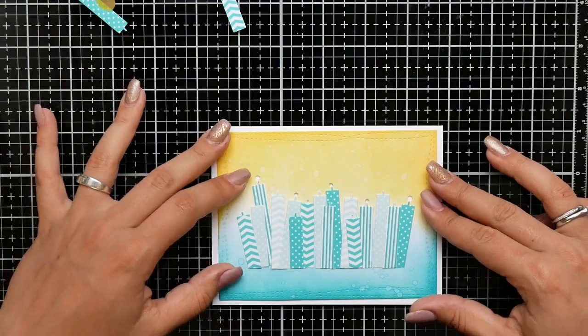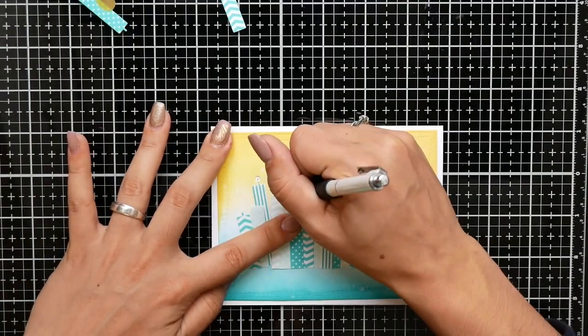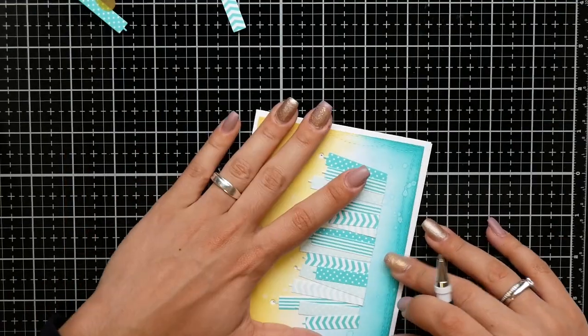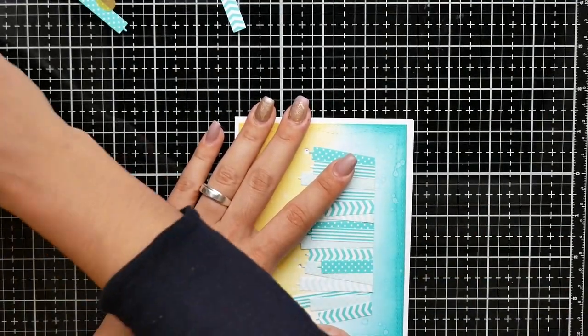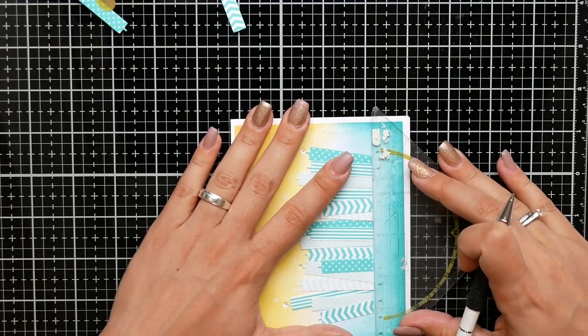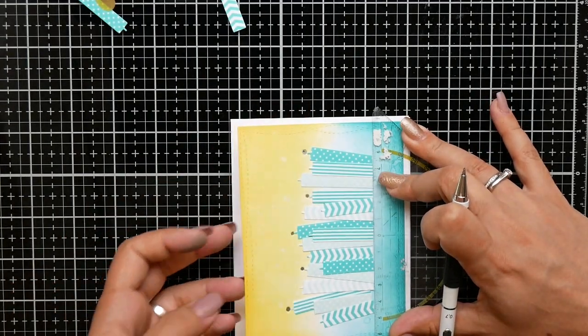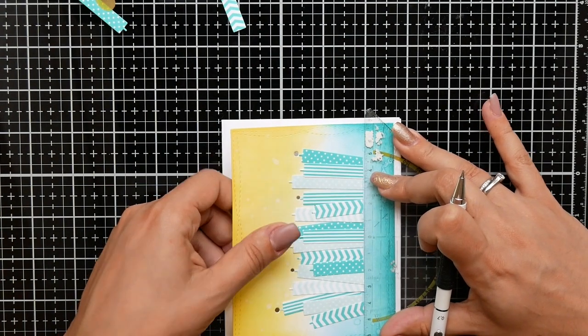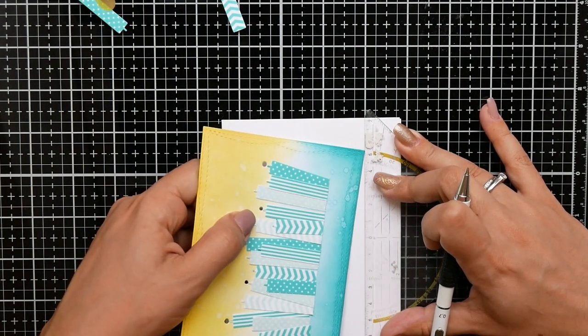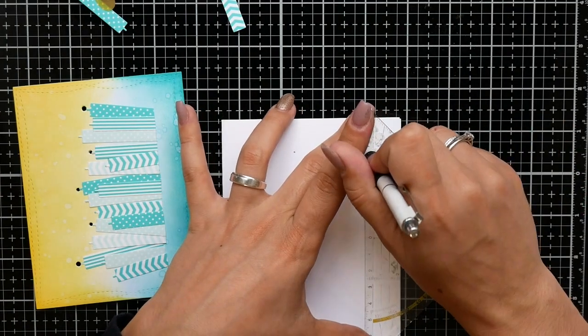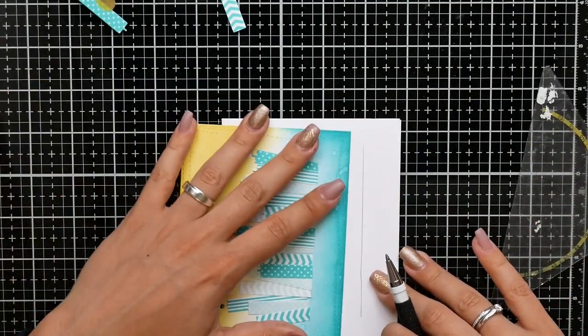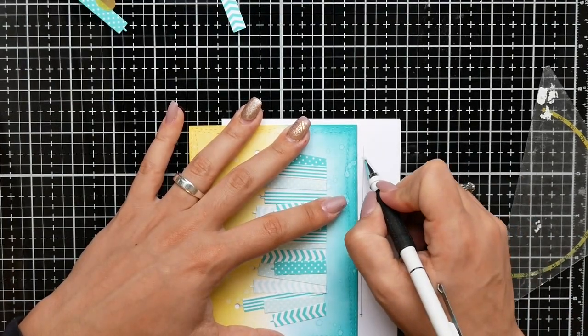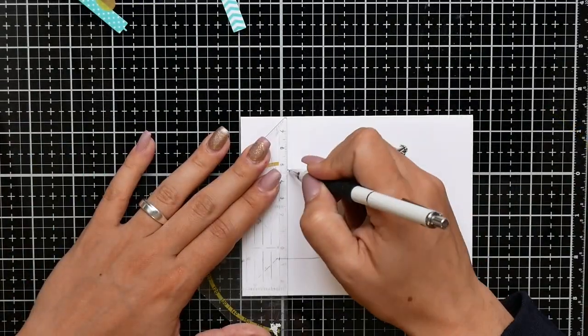Now I'm tracing the holes on the card panel and card base. I have to trace where the candles are because later this will be a slider or push mechanism. I want the slider mechanism behind the candles.